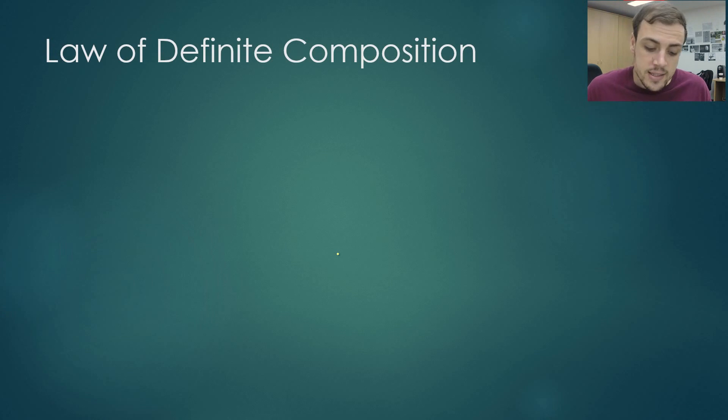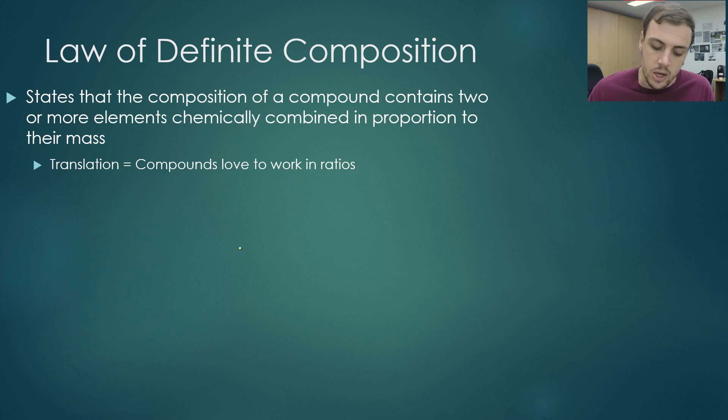So let us start on the law of definite composition. What this law tells us is that the composition of a compound contains two or more elements that are chemically combined in proportion to their mass. Now if we were to translate that, put that into more layman's terms, all that says is that compounds love to work in ratios.